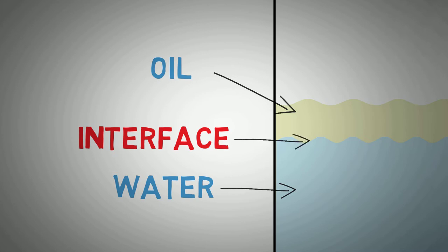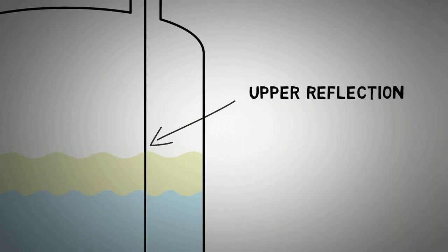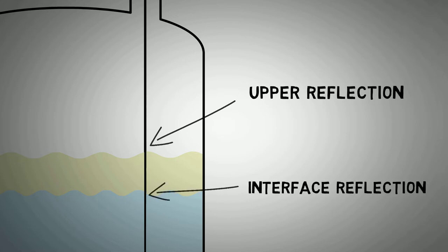In an interface setup, when the pulses hit the top layer of the media, some of the energy is reflected to give the upper measurement. However, some of the energy carries on through the upper level and onto the interface level. These remaining waves are then reflected just like the upper level. This signal can then be converted into a level measurement for the interface.